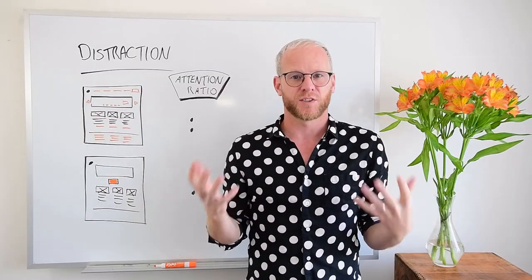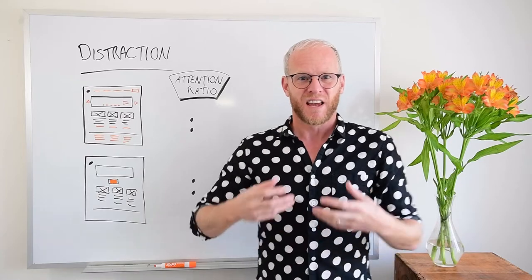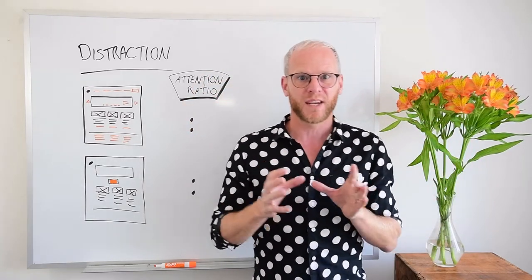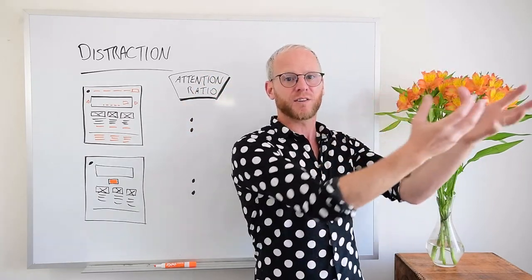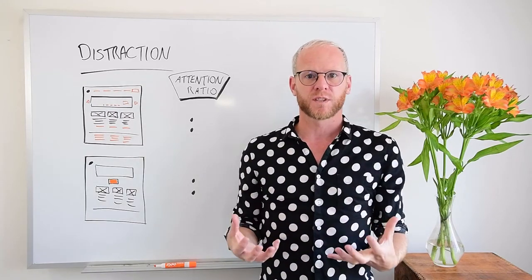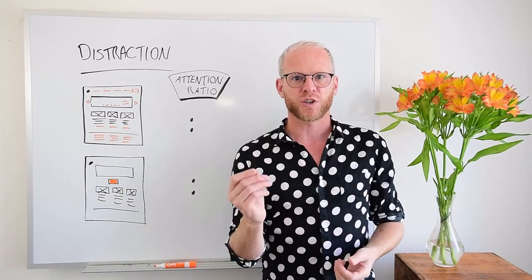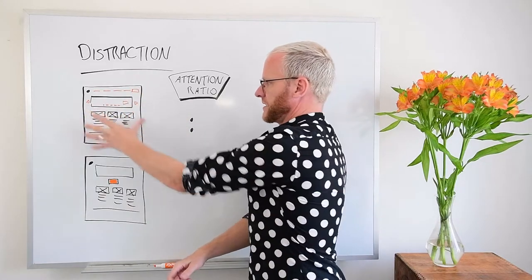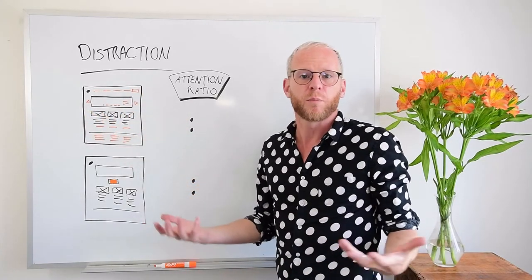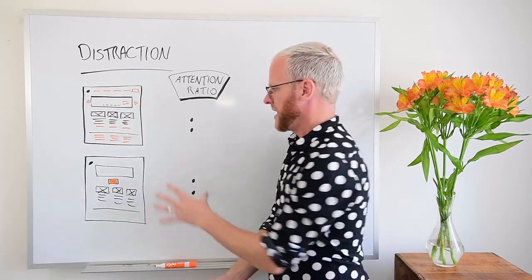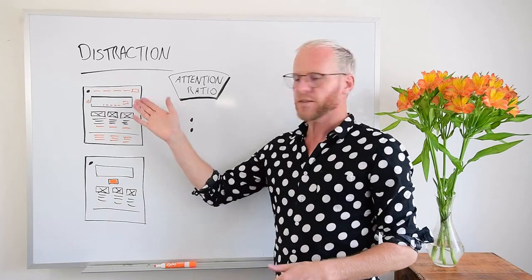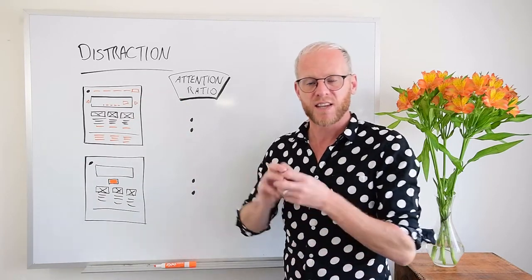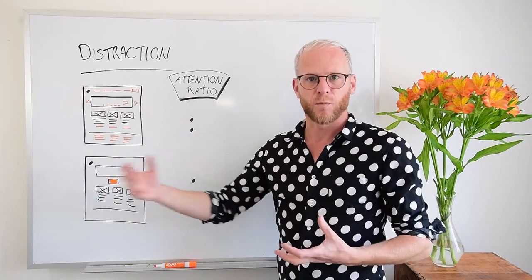The design principle of distraction. This one's all about identifying the elements on a page that might be distracting your visitors from the thing you want them to do — your conversion goal. If you look at these wireframes here, this is a standard, typical homepage on your website. This is a landing page. Anything in orange is an interactive element — it's a link taking you somewhere else.